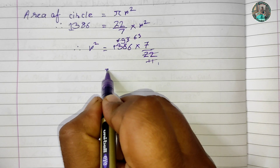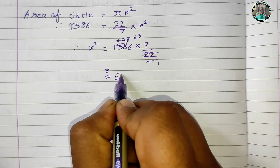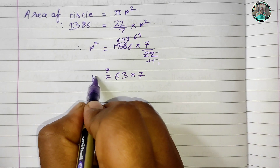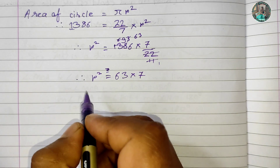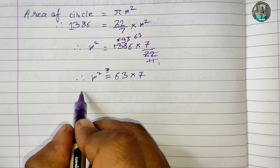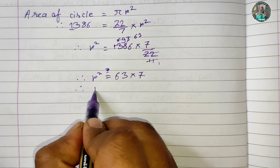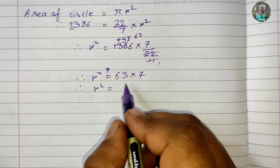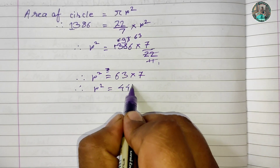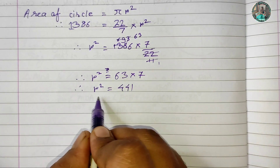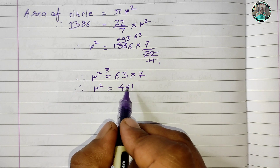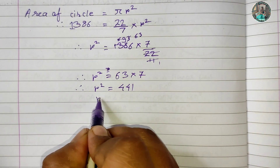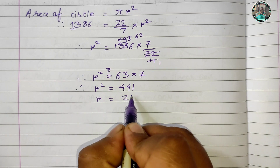We have 63 into 7. We have value r². What do we do? r² = 63 into 7 = 441, and the square root of 441 is 21. So r is equal to 21.